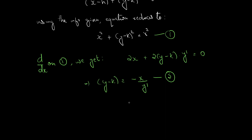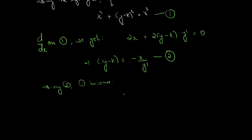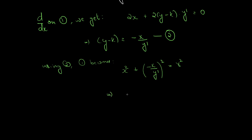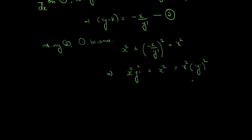Using equation 2, equation 1 becomes: x squared plus y minus k the whole square equal to R squared, where instead of y minus k we substitute minus x by y dash. The whole square gives us x squared y dash squared plus x squared equal to R squared y dash squared. Multiplying y dash squared throughout.